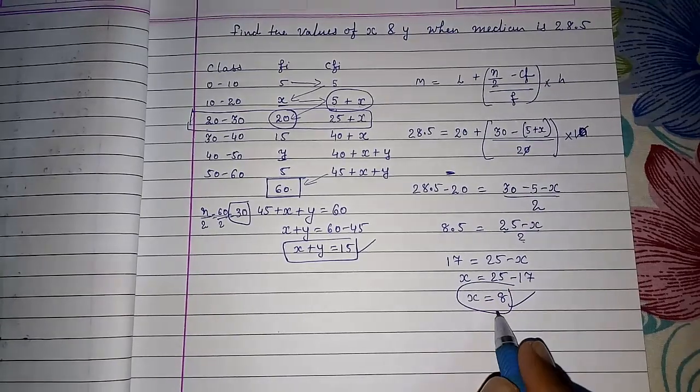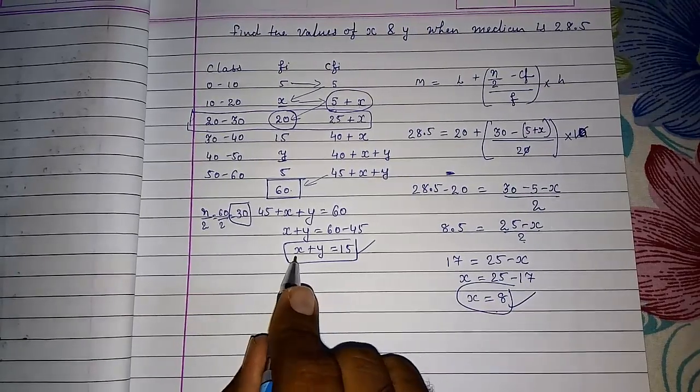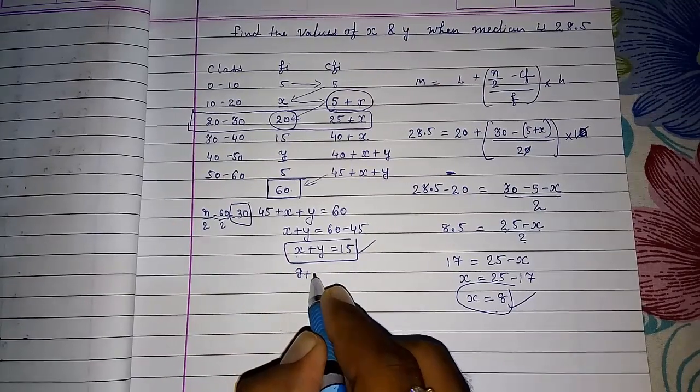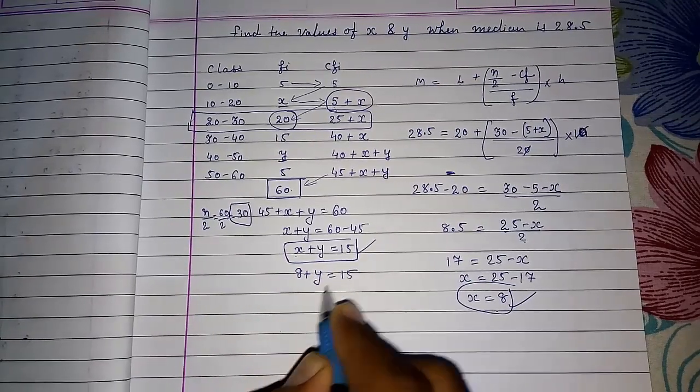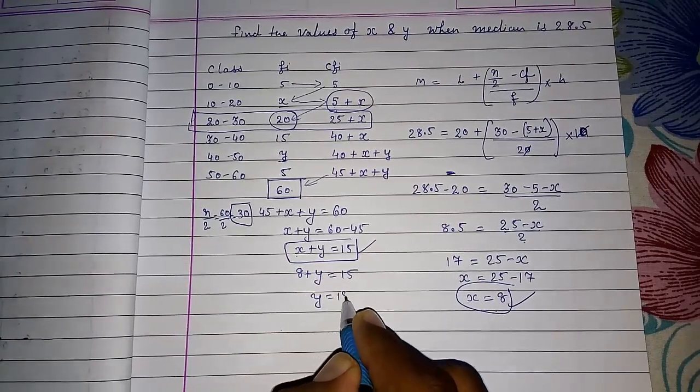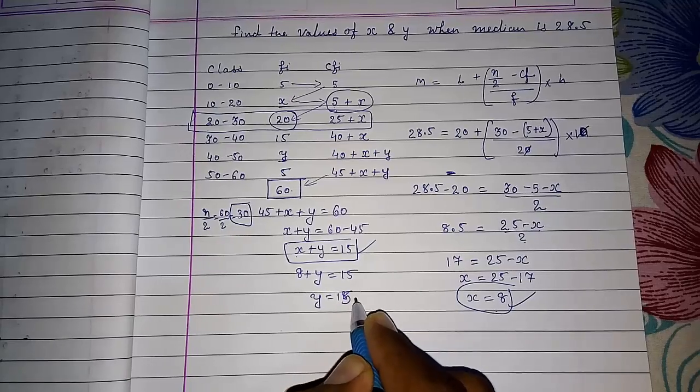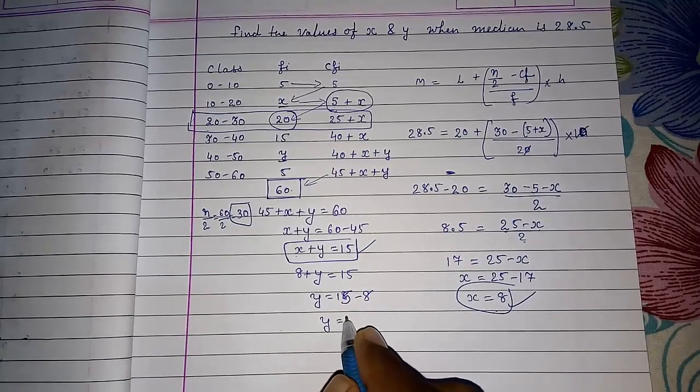Now X on this side, 25 minus 17 gives you 8. So we got X is 8. Now we will keep that X in this. So 8 plus Y equals to 15. So Y will be 15 minus 8. So Y will be 7.